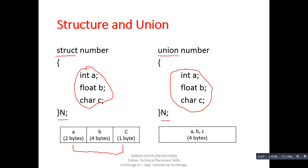Now A occupies two bytes, B occupies four bytes, and C occupies one byte according to the data type of these variables. So combinedly, n variable occupies seven bytes of memory in case of structure.